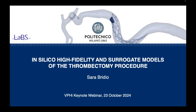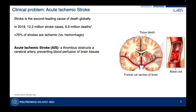The title of my thesis is 'In Silico Fidelity and Surrogate Models of the Thrombectomy Procedure.' The idea was to use in silico modeling to address a clinical problem: the treatment of acute ischemic stroke. Stroke is the second leading cause of death globally, with around 12 million cases per year. Over 70% of stroke types are ischemic, meaning a blood clot blocks the cerebral artery, preventing blood perfusion of downstream brain tissues, causing tissue death and severe consequences for the patient.